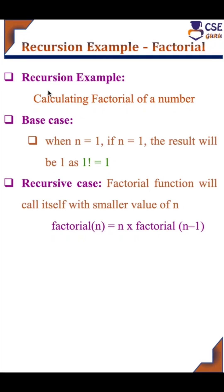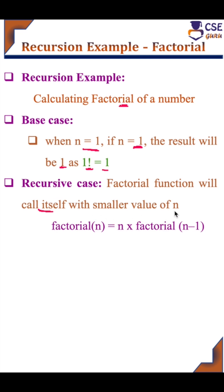Recursive function to implement factorial — calculating factorial of a number. The base case is when n is equal to 1; if n value is 1, it has to return 1 as the result, because factorial of 1 is 1. In the recursive case, the factorial function calls itself with a smaller value of n.